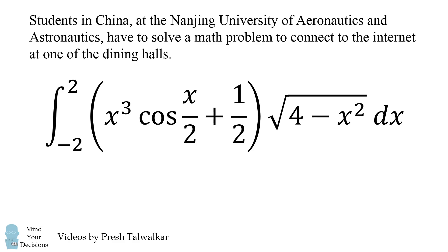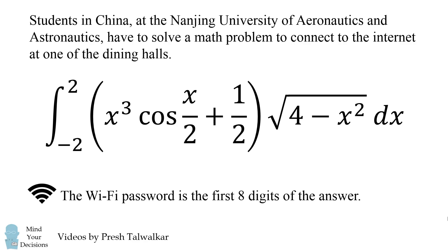Here's the problem that went viral. It's the integral from negative 2 to 2 of the following quantity: x cubed times the cosine of x over 2, plus one half, and that entire thing multiplied by the square root of 4 minus x squared. The Wi-Fi password is the first eight digits of the answer. You can't use the internet to solve this problem, and you're also not allowed to use calculators — you have to solve this using pencil and paper.